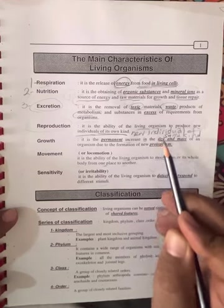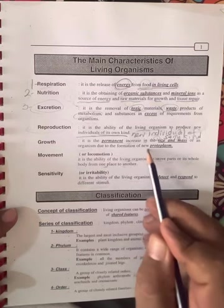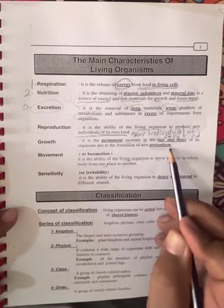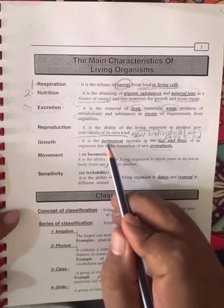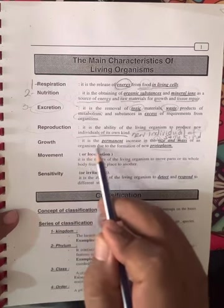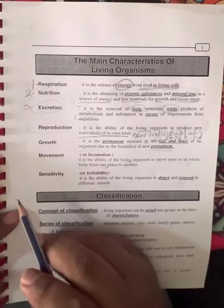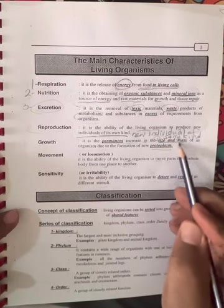So growth is the permanent increase in the size and mass first, then the mass of an organism due to formation of new protoplasm. Mainly increase in size and mass of the organism.